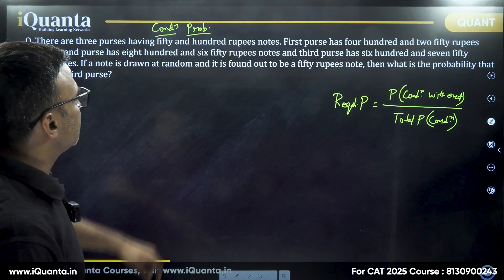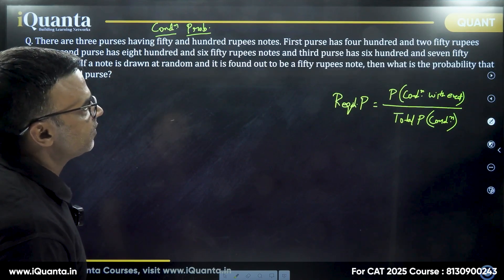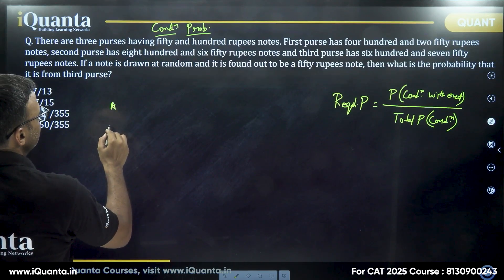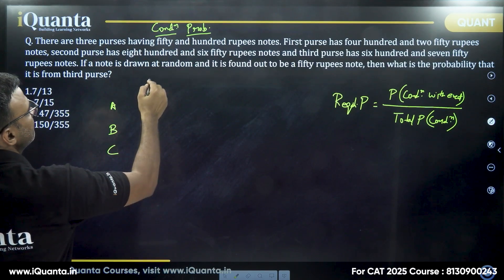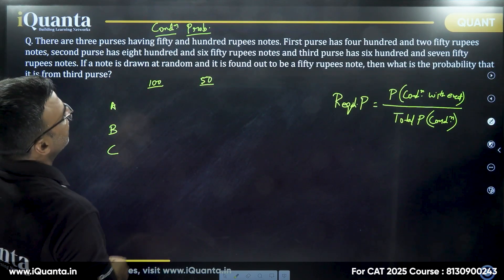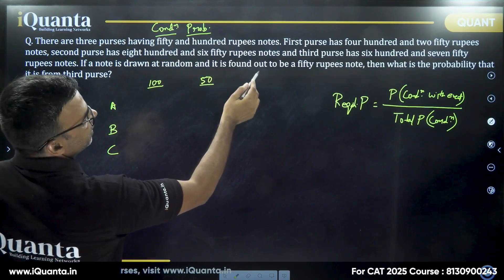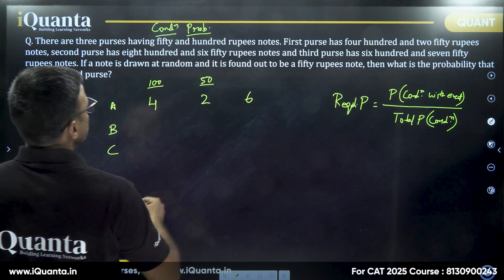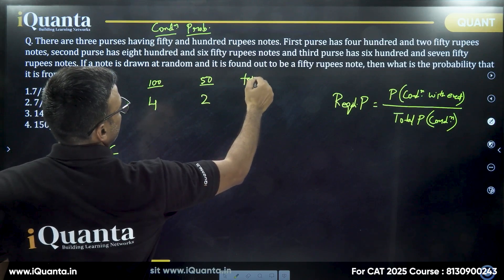So here it says there are three purses having 50 and 100 rupee notes. First purse has 400 and 250. So let me put the names of purses as A, B, C. We have 100 rupee notes and 50 rupee notes. The first one has four 100 rupee notes and two 50 rupee notes, so total six. Total notes are six.